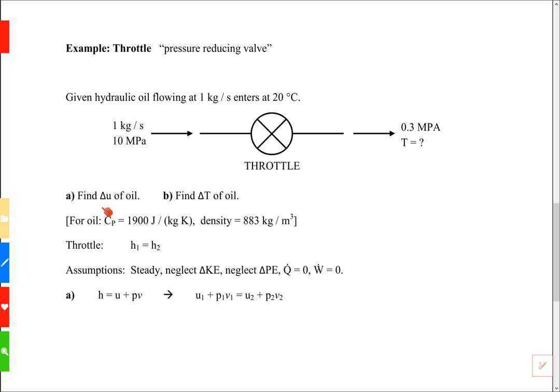We're asked to find the change in internal energy of the oil and the delta T of the oil. We're given a specific heat at constant pressure of 1900 joules per kilogram per Kelvin and we're given the density.